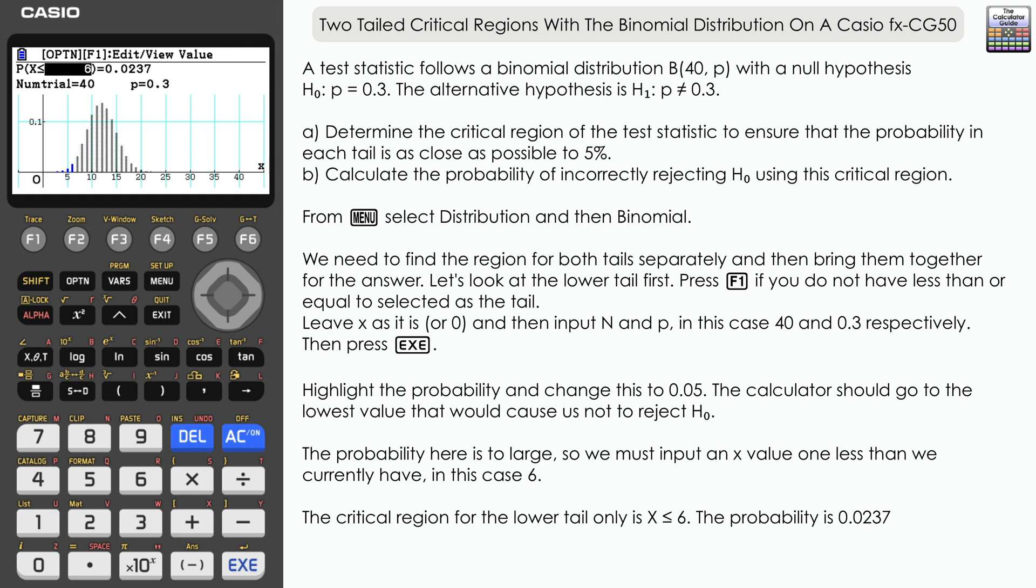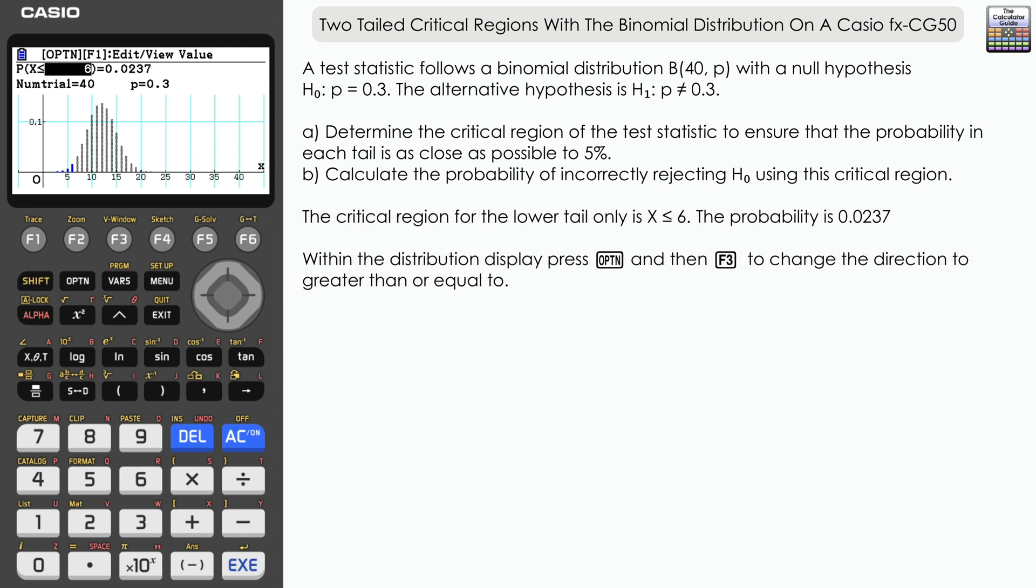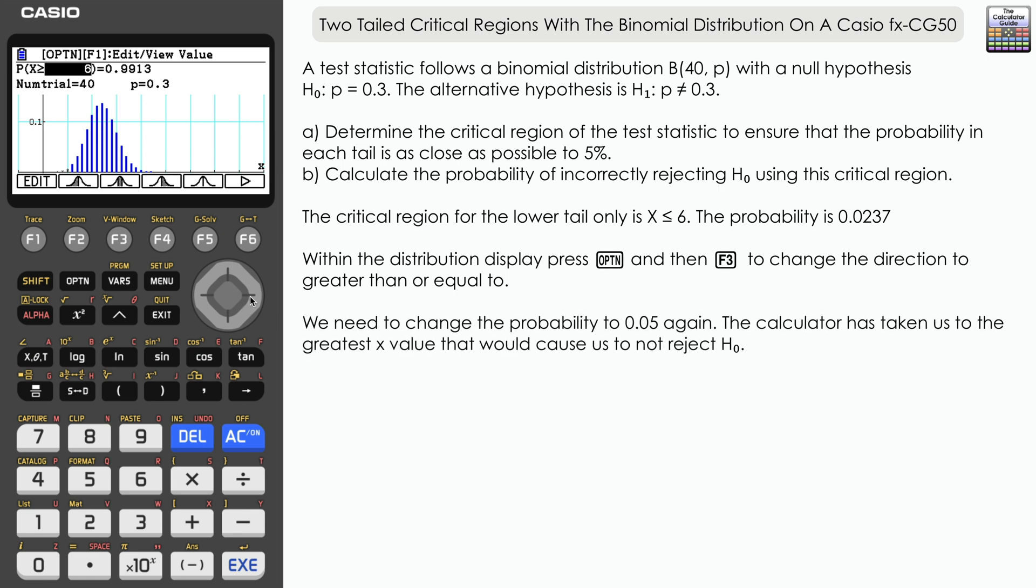Let's go to the upper tail now. Within the distribution display, we can change to looking at regions greater than a given value. Press Option, then F4, and you can see we've changed the orientation to be greater than or equal to. But since our x value is still 6, we're not showing any relevant probability, so we need to change that back to 0.05 and press Execute.